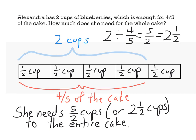To review, it was really important. I knew that I started off with four fifths of the cake. That's four out of the five rectangles in my tape diagram. And that was equal to two cups of blueberries right here.